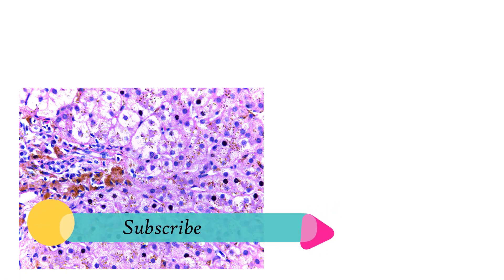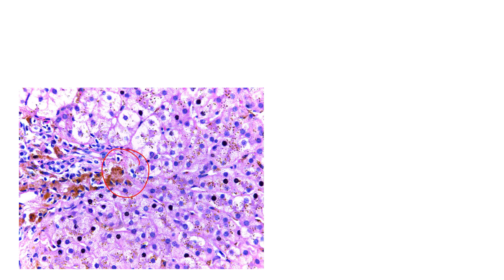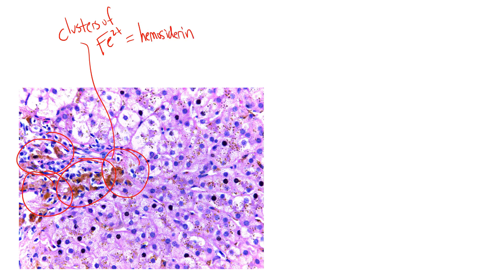On histology, if you take a liver biopsy from this patient, you'll see brownish dark areas within the hepatocytes. These are clusters of excess iron that are overwhelming the liver — too much iron stored via ferritin. The name for these clusters of iron in the tissues and organs is hemosiderin.